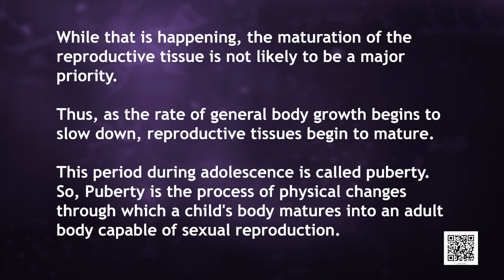This period during adolescence is called puberty. Puberty is the process of physical changes through which a child's body matures into an adult body that is capable of sexual reproduction. Now let us discuss the male and female reproductive parts in humans.